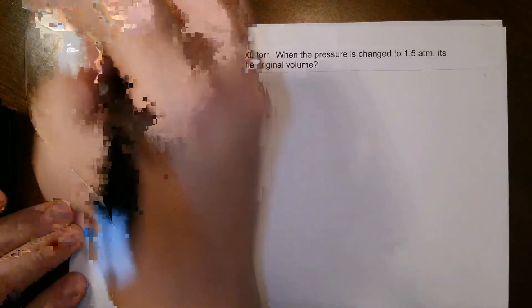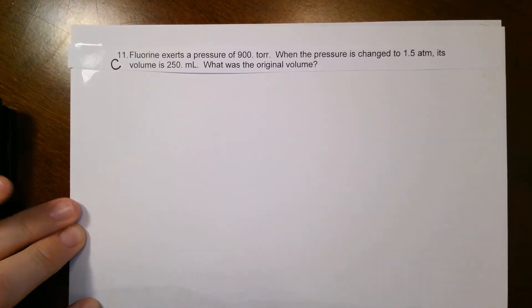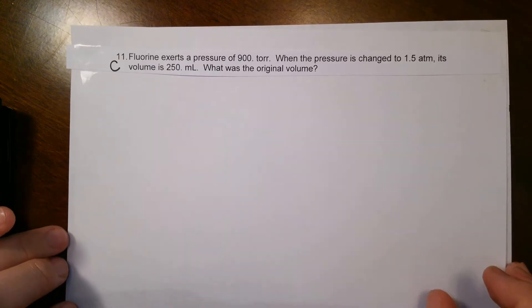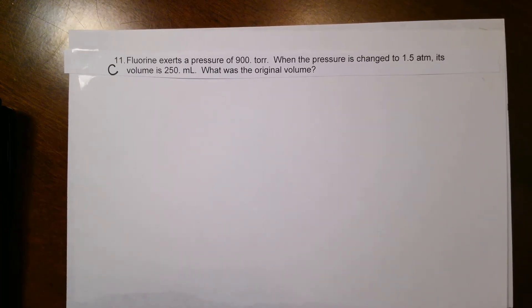Here is question 11 from section C on the combined gas law. It says fluorine exerts a pressure of 900 torr. When the pressure is changed to 1.5 atm, its volume is 250 milliliters. What was the original volume?